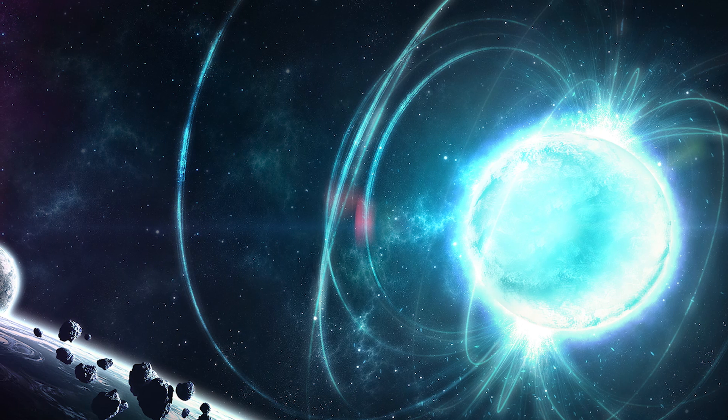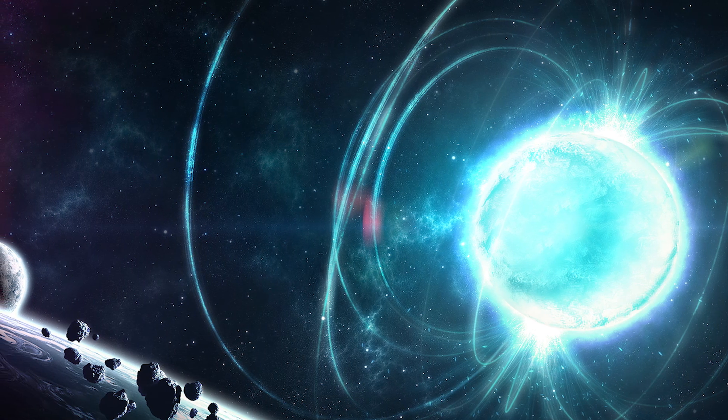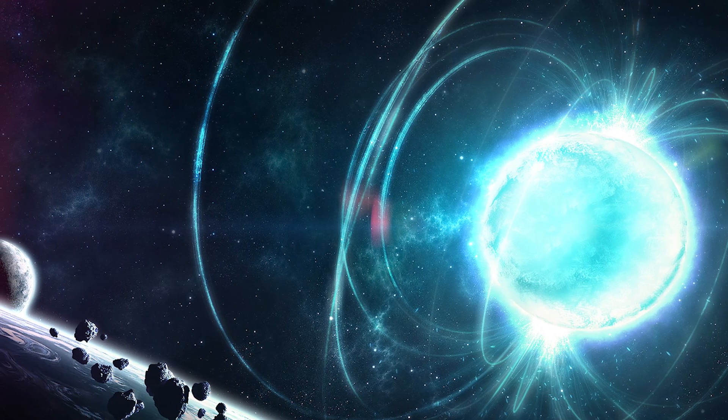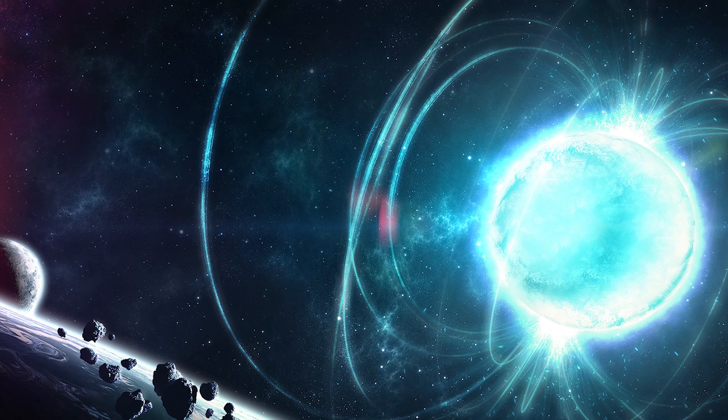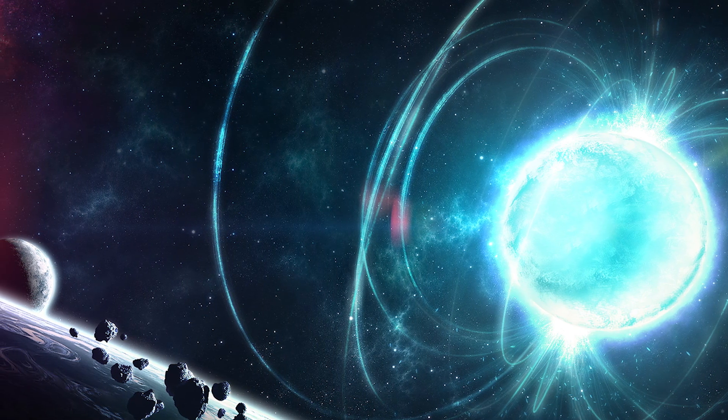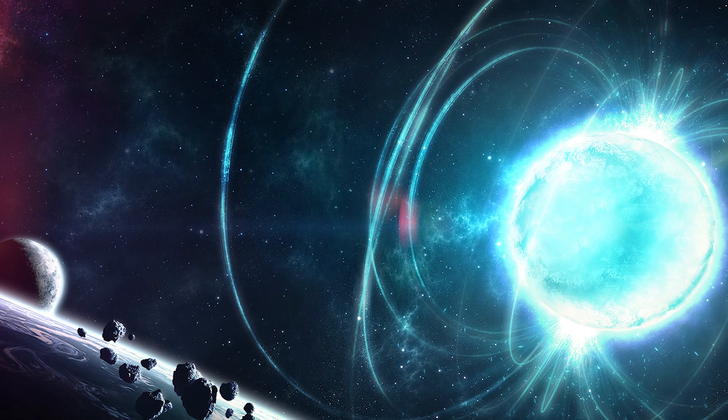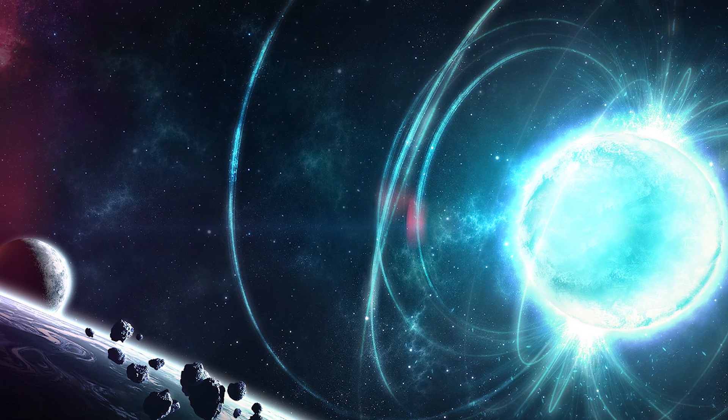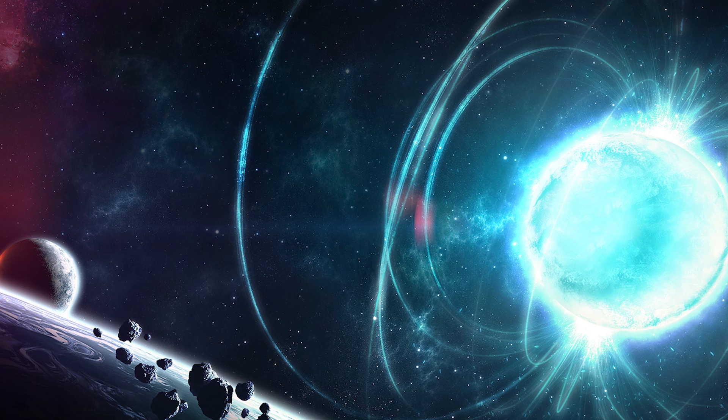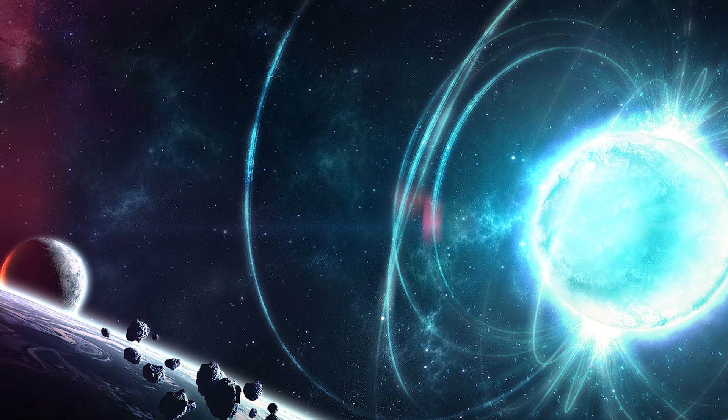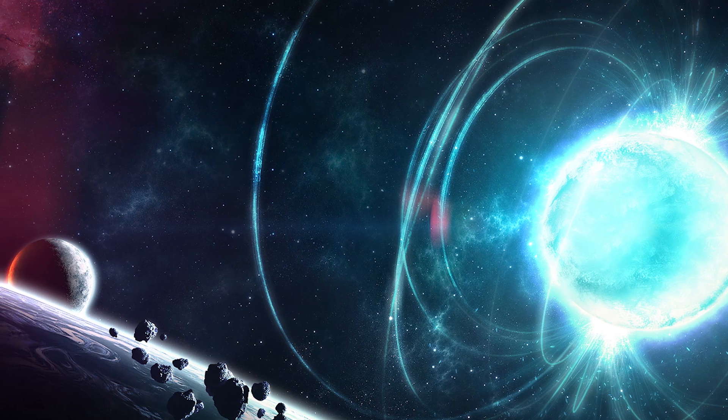If a magnetar could pull off a feat like that, who's to say the dark side of a neutron star couldn't pull the iron straight from our blood in a similar fashion, all but effectively wiping out the human race, in addition to so many other lifeforms here on Earth? The answer all but lies in the distance said magnetar would have to be from our planet.